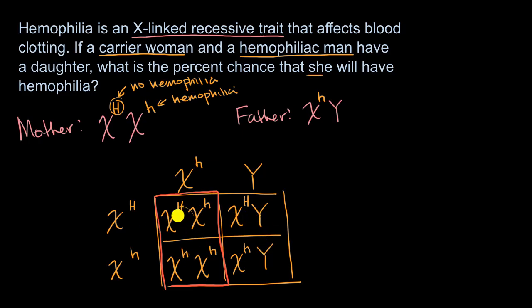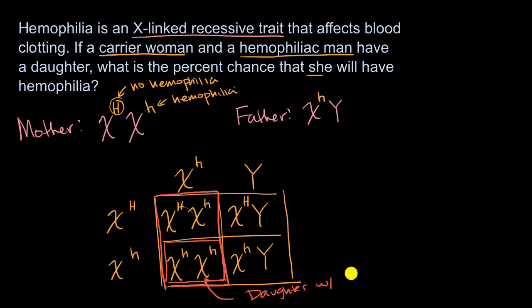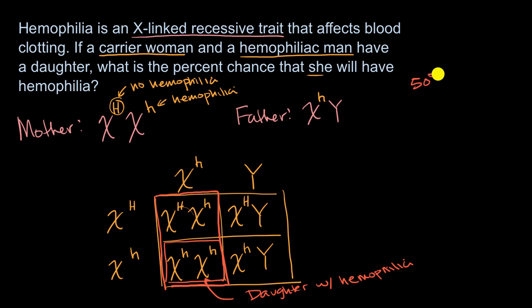Out of the two scenarios where they have a daughter, one of those scenarios has two of the recessive alleles — and so this is a situation where you have a daughter with hemophilia. So if we know they have a daughter, what is the percent chance that she will be a hemophiliac? One out of two — so there is a 50% chance.